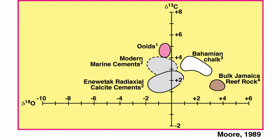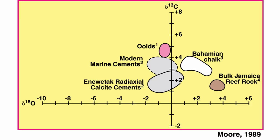In terms of isotopic signature for marine cement: no surprise, because we said that the PDB scale used for carbonate is based on the belemnite, which is a marine species. All of the isotopic values for marine cements come close to zero. It's not exactly zero because it depends when it was deposited and at what temperature, which will impact both the delta-18O and the delta-13C. We have data for modern ooids, modern marine cement, Bahamian chalk, bulk Jamaica reef rock, and radiaxial calcite cement from an atoll in the Pacific called Eniwatak Atoll.